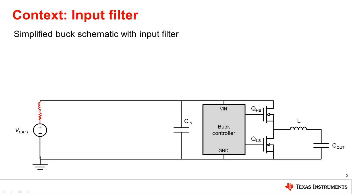First let's talk about EMI filters — what they are and why we need them. For this video we will focus on low frequency EMI, which will be conducted differential mode EMI below about 30 megahertz. A buck regulator is a switching regulator which generates noise at the switching frequency, generally hundreds of kilohertz up to a couple megahertz, and generates noise at that frequency's harmonics.